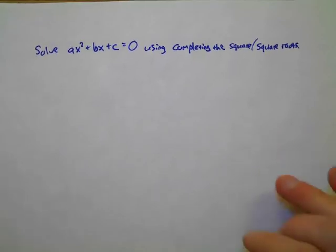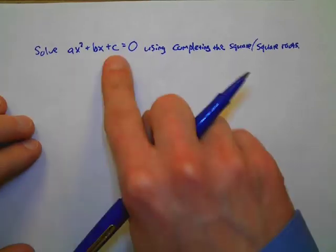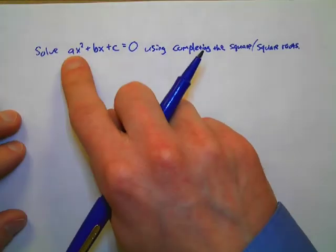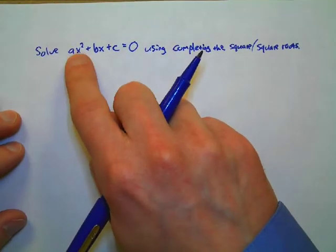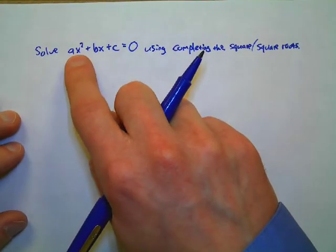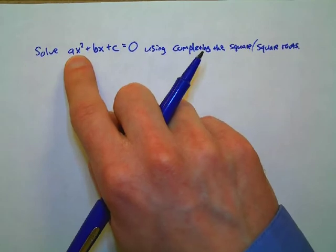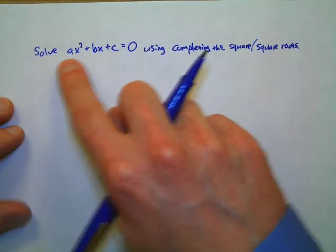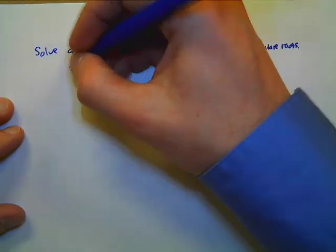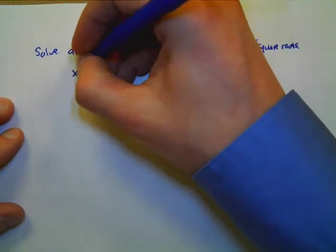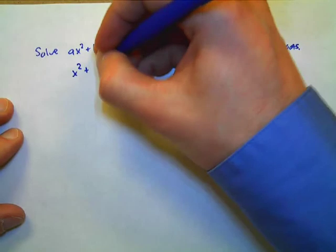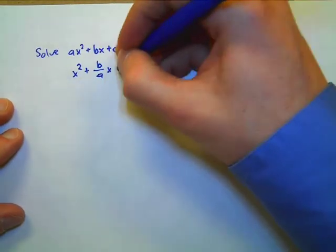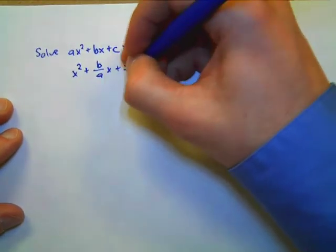So, completing the square. The first thing we want to deal with anytime we're completing the square is that lead coefficient of a. We don't know what it is — a could be one, but we just don't know. So we're going to divide everything by a. We end up with x² + (b/a)x + c/a = 0.